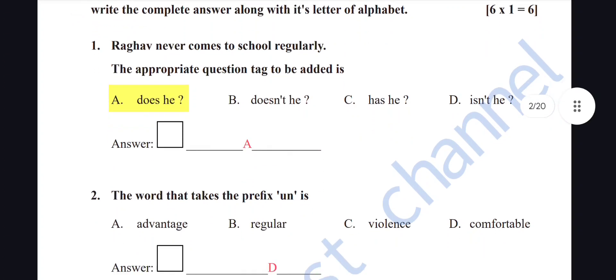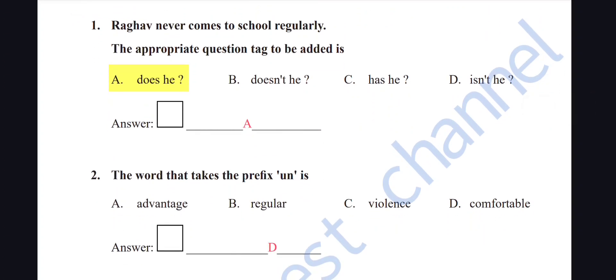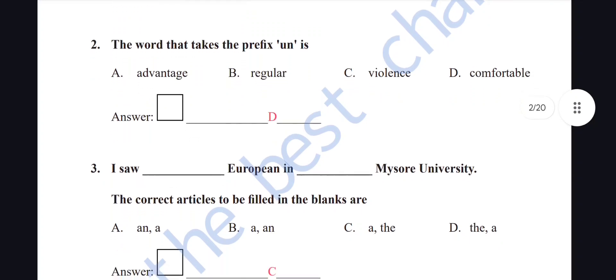Six questions for one mark each. First: 'Raga never comes to school regularly' — the appropriate question tag is 'does he.' Since the sentence has a negative word 'never,' the question tag must be positive. If the sentence is positive, the question tag will be negative. So the correct option is A: does he.